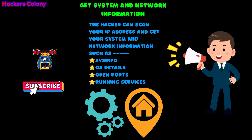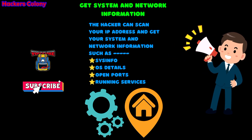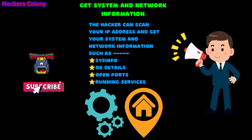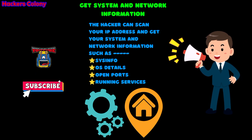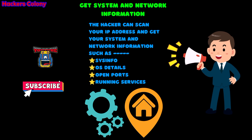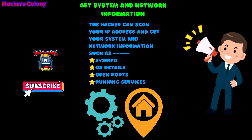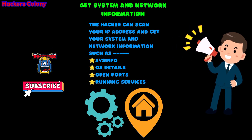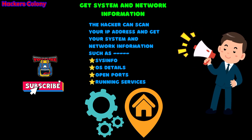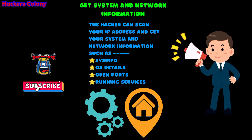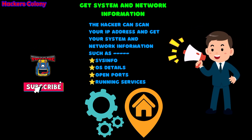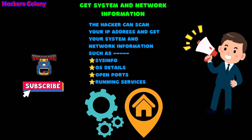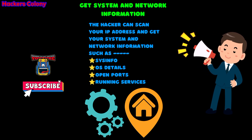System info means the role your system is using — whether it's a computer or Android. They'll also get the OS version, like Android 10 or 11, or Windows 8, 10, or 11. They'll look for open ports to get into your device easily, and they'll see whatever apps and services are currently running on your device.